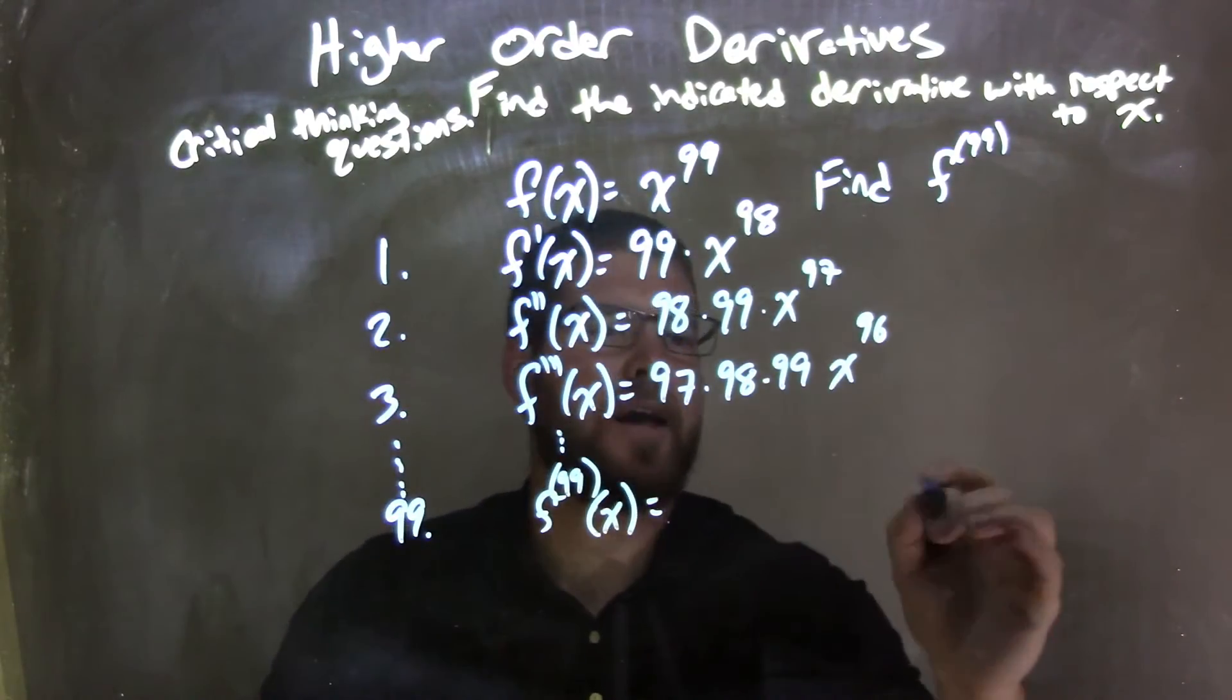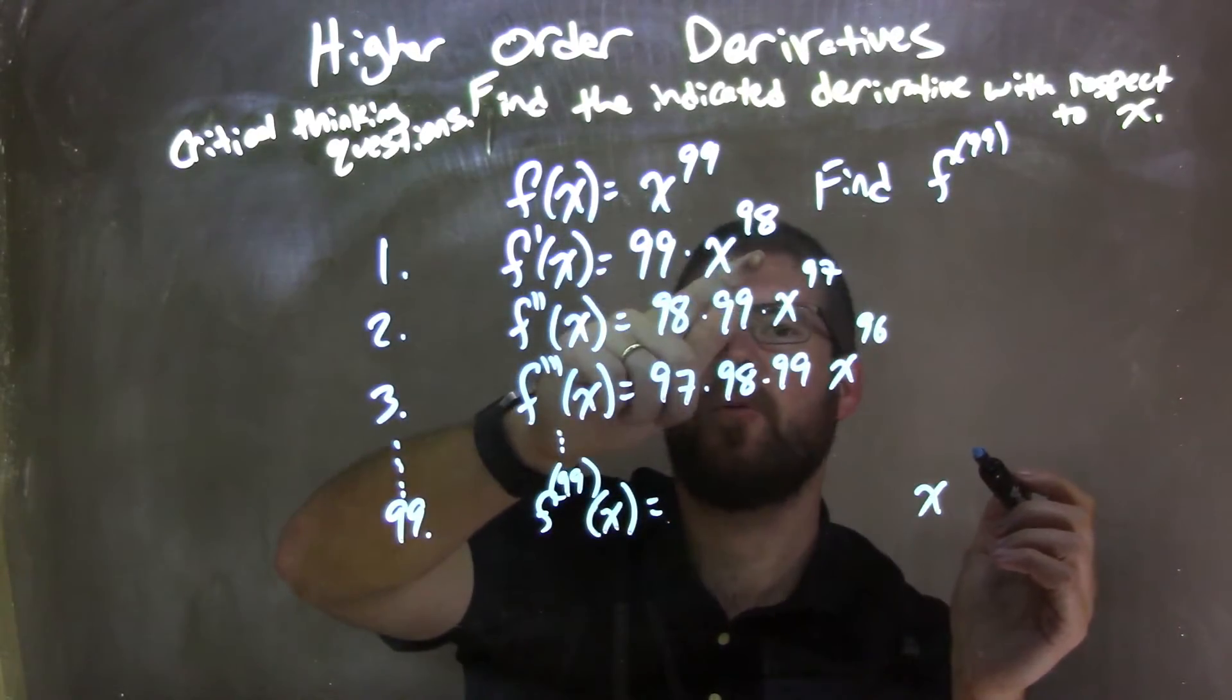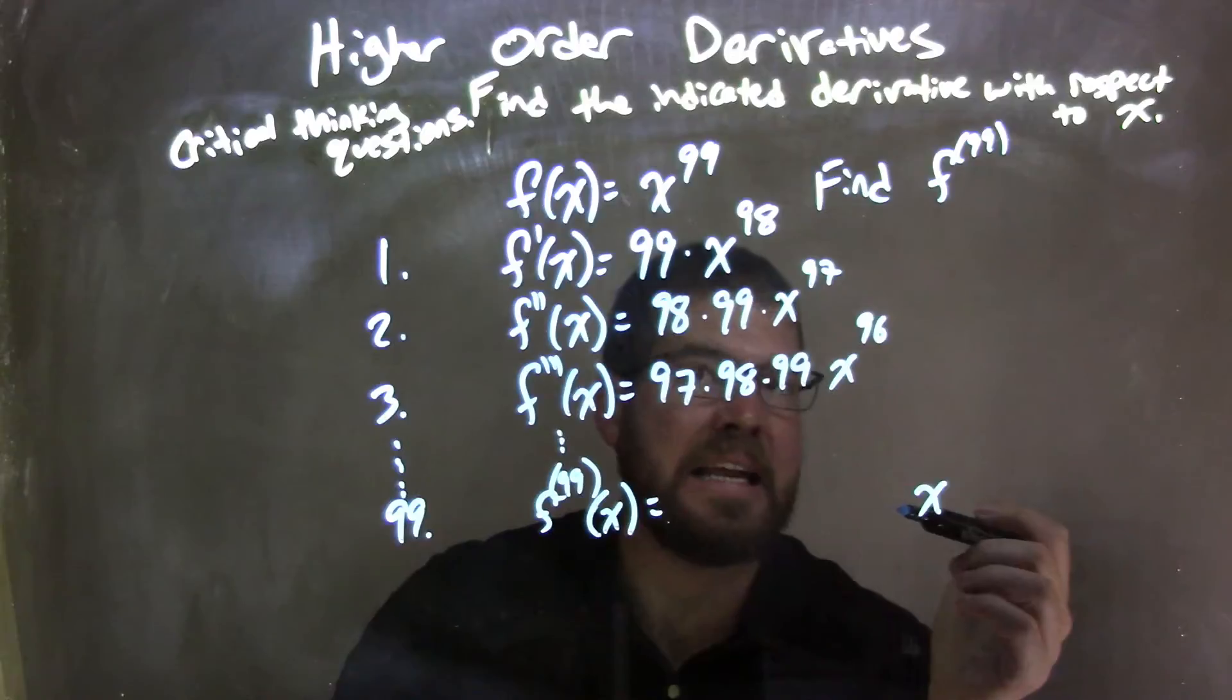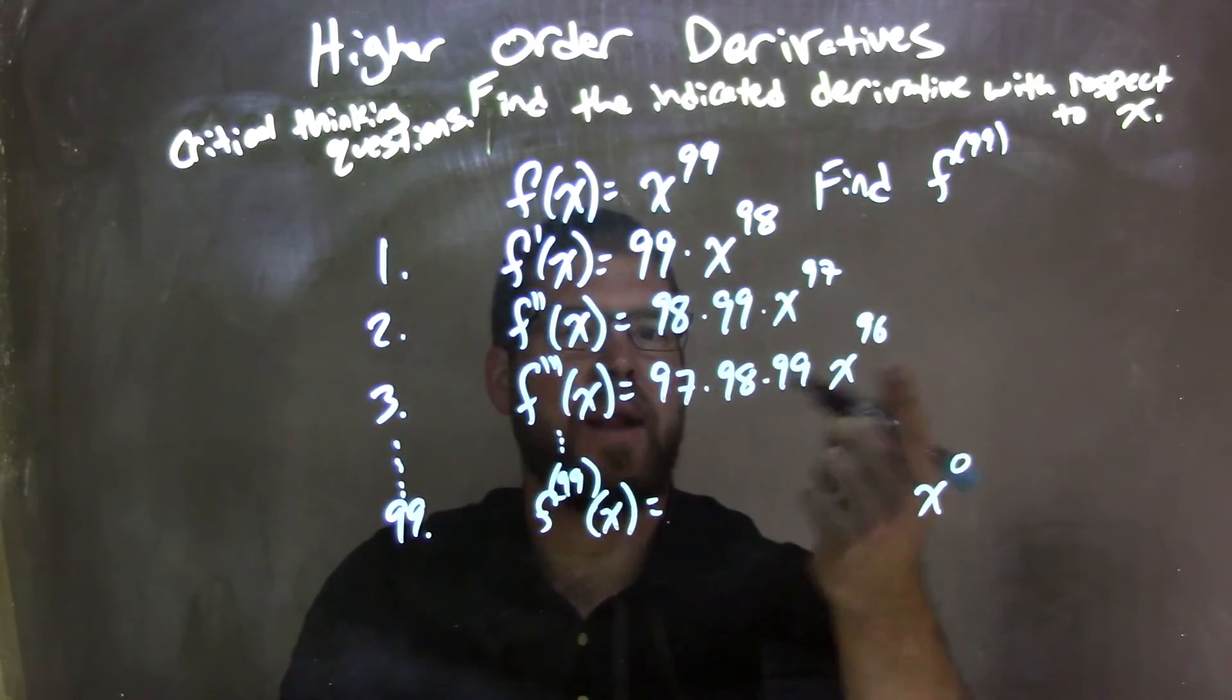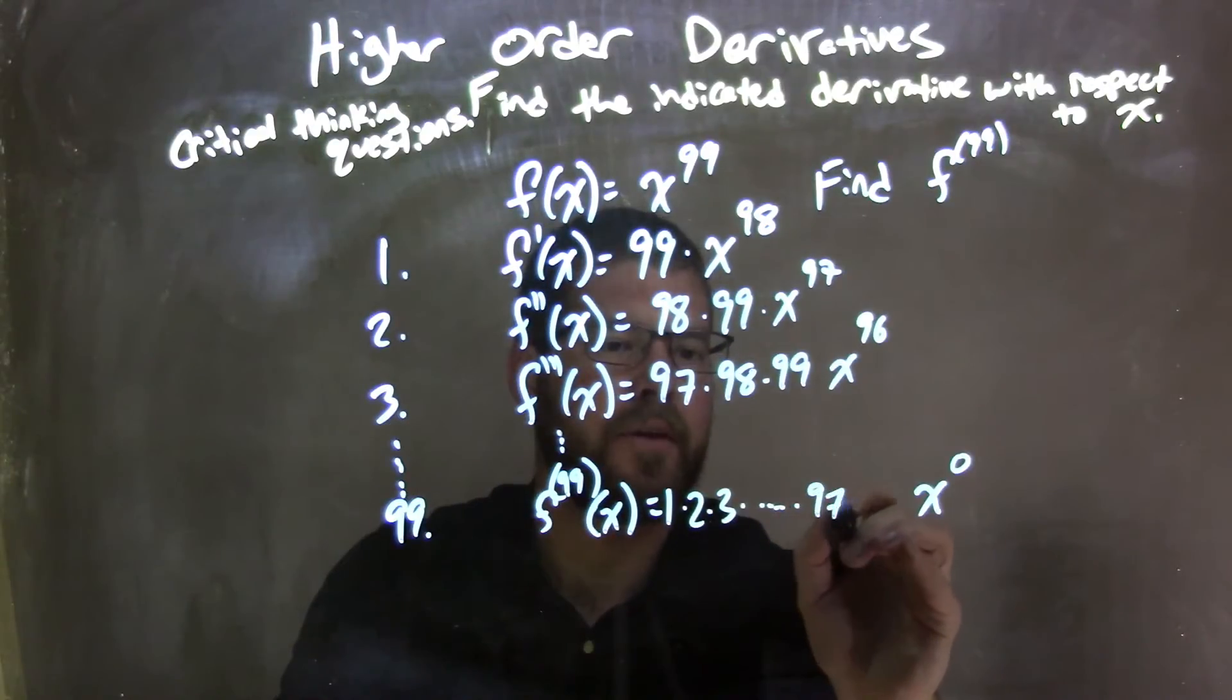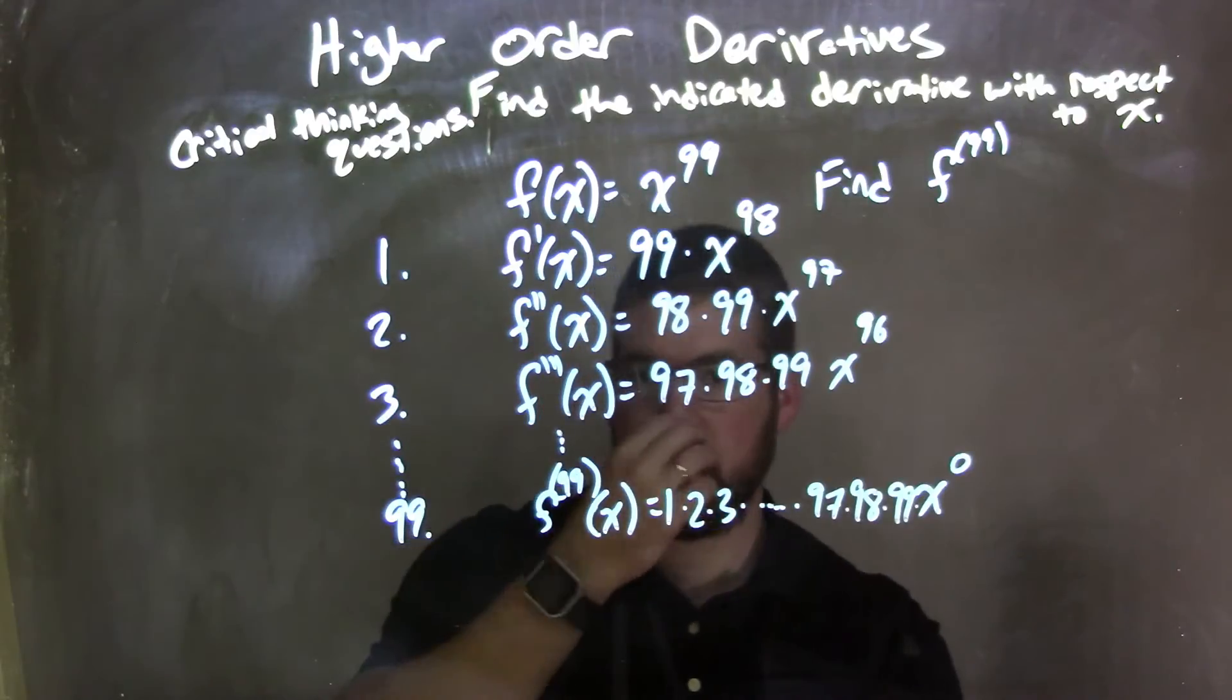The exponents would keep coming down. Our exponent would be x to the - we subtract the exponent each time, so first derivative is subtracted by one. For the 99th derivative, 99 minus 99 is 0. So we'd have every single number leading up to it, so the previous exponent would have been 1, so we have 1 times 2 times 3 up till 97, 98 times 99 times x to the 0 power.